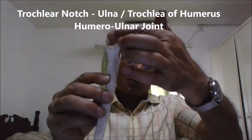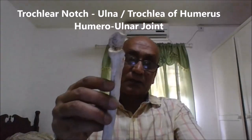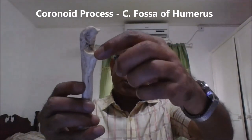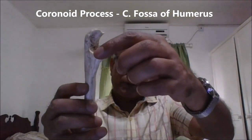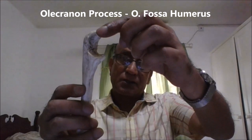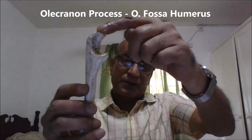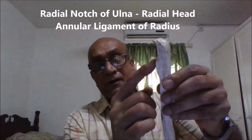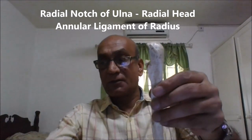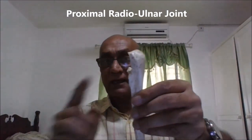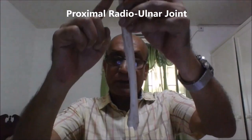Now let's take a look at the ulna — also the left side. This is the trochlear notch of the ulna, which fits into the trochlea of the humerus to form the humero-ulnar joint. This is the coronoid process, which fits into the coronoid fossa when the arm is fully flexed, and this is the olecranon process, which fits into the olecranon fossa when the arm is fully extended. On the lateral side, there is a depression called the radial notch of the ulna, which fits the head of the radius. Its margins give attachment to the annular ligament, forming the superior or proximal radio-ulnar joint.